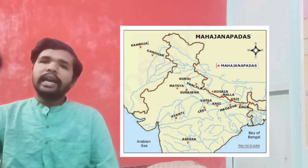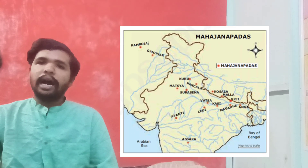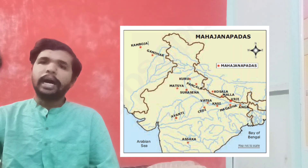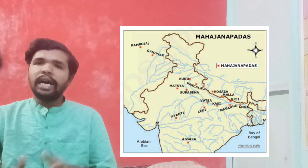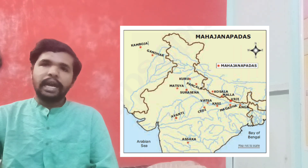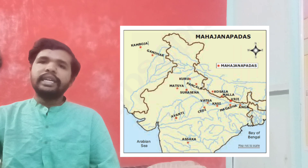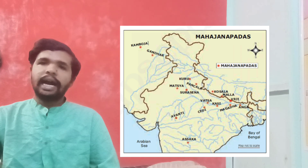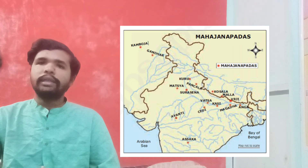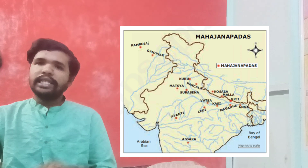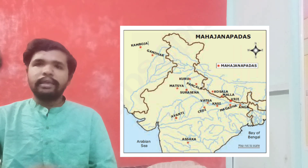The first Mahajanapada is Anga. Anga is in the Bihar region and has Champa as its capital. The second is Kashi. Kashi is now known as Varanasi, and Varanasi is the capital of Kashi.